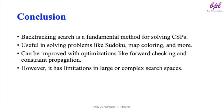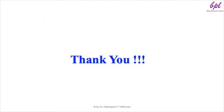Conclusion: backtracking search is a simple but powerful technique for solving CSPs. It is highly effective for small to medium-sized problems such as Sudoku or map coloring. With optimizations like forward checking and constraint propagation, its efficiency can be improved, but it does have limitations when dealing with larger or more complex search spaces. Thank you for watching. See you in my next video — till then, keep learning!